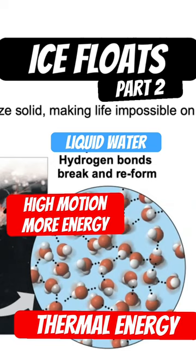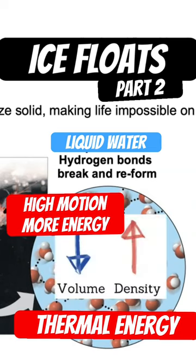Ice floats because freezing causes expansion and an increased volume, and this lowers the density. When we heat ice and it melts, the volume decreases, which increases the density.